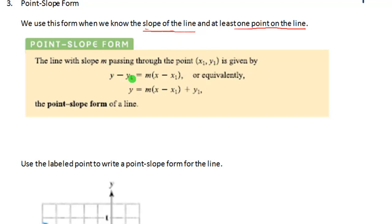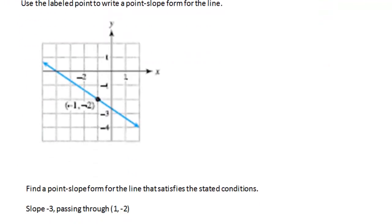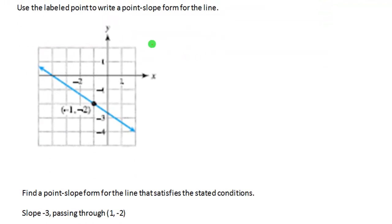Here is the general form: y minus y1 equals m times x minus x1. Here x1 and y1 is an ordered pair that is given to you, and m of course is the slope. Let's look at an example.